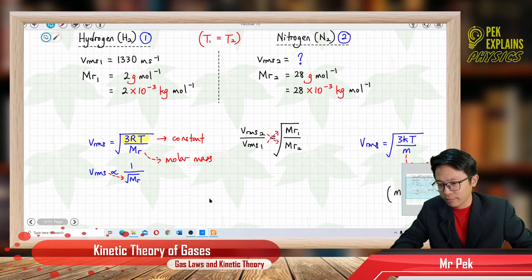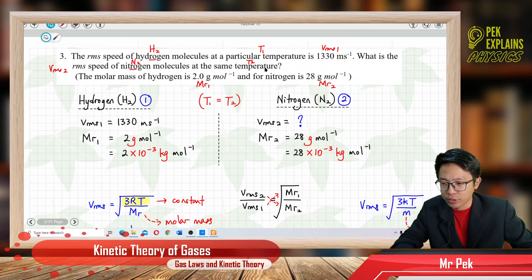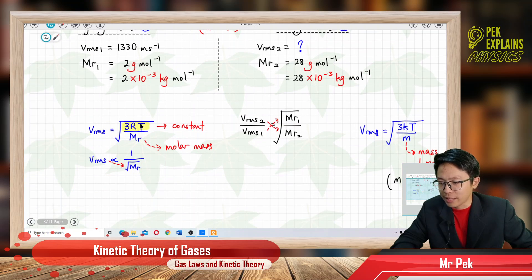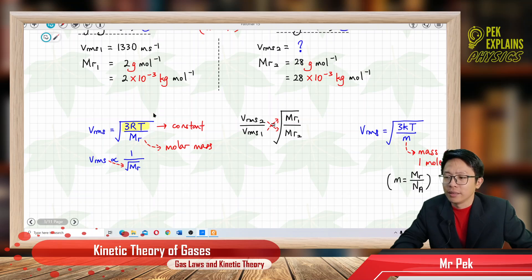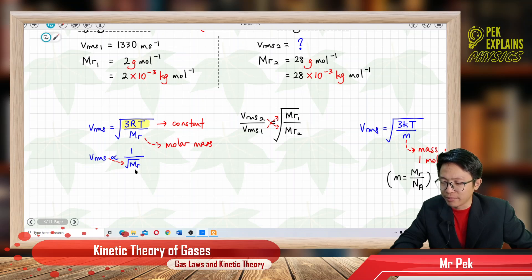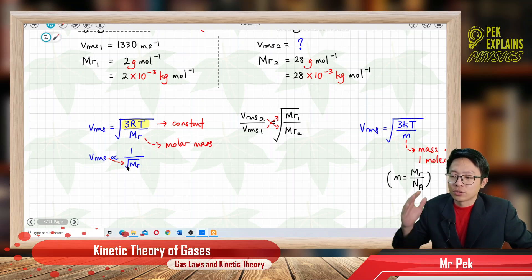Back to the question: same temperature means T1 equals T2, so the term 3RT is constant. Therefore, VRMS is proportional to 1 over the square root of molar mass — with molar mass inside the square root. VRMS is at the top and molar mass is at the bottom, so they are on opposite sides.